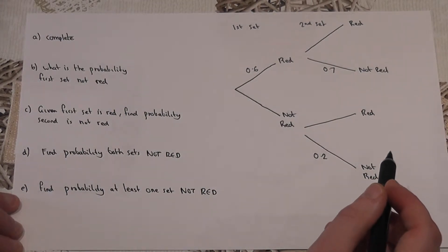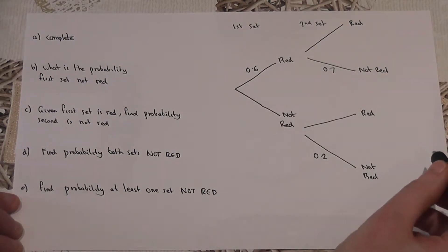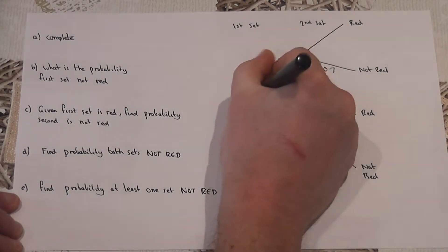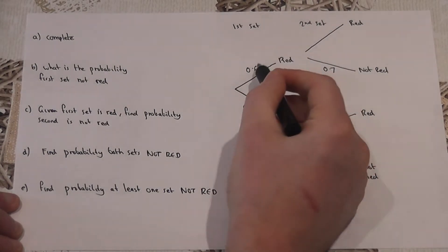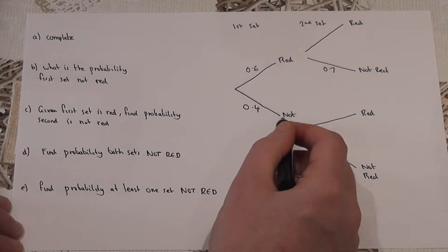So if the first set have a chance of red of being 0.6 then the probability of not being red must be 0.4. Six out of ten chance of being red, four out of ten chance of not being red.